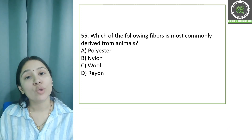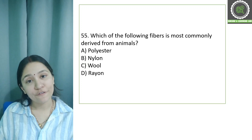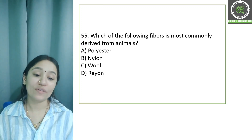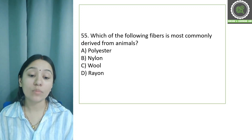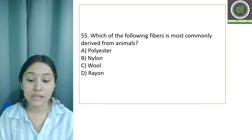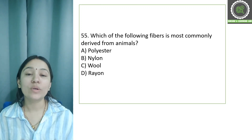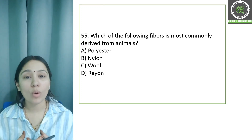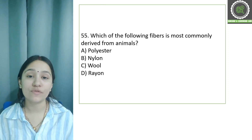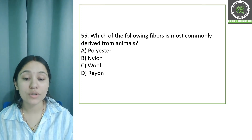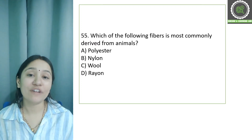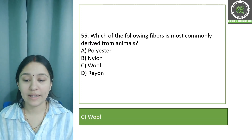Question number 55: Which of the following fibers is most commonly derived from animals? Options: polyester, nylon, wool, and rayon. Wool comes from an animal source, so wool is the fiber of animal origin — that is the correct answer.